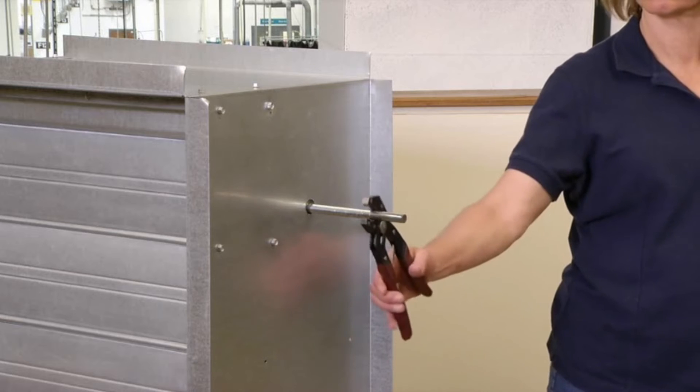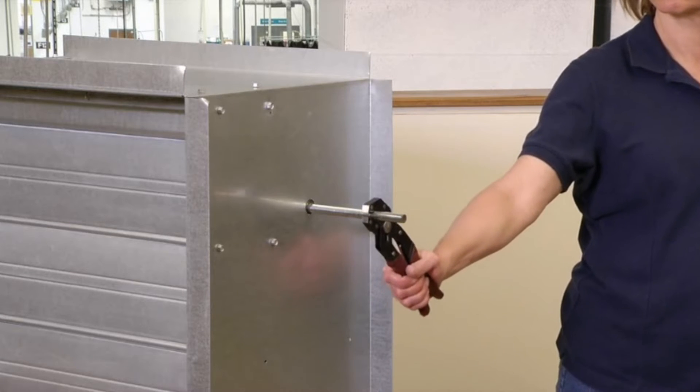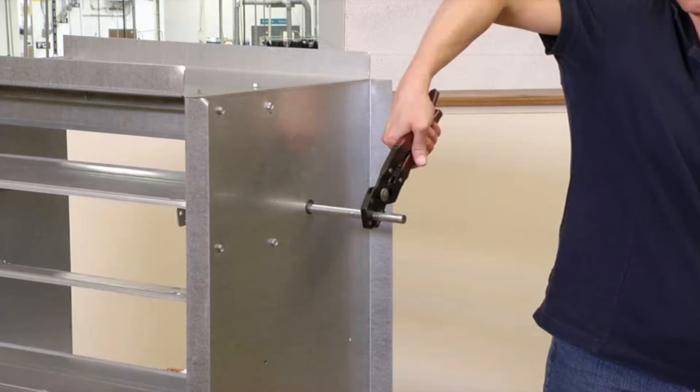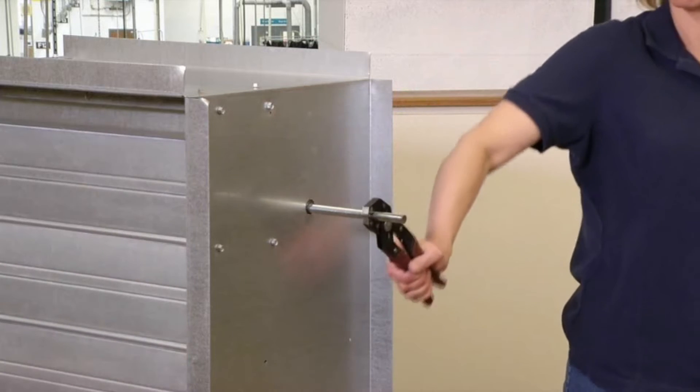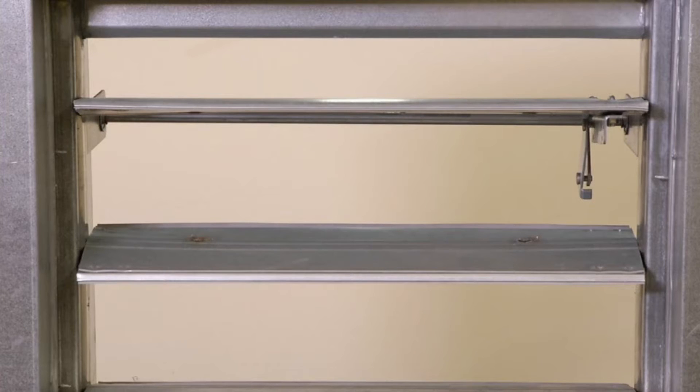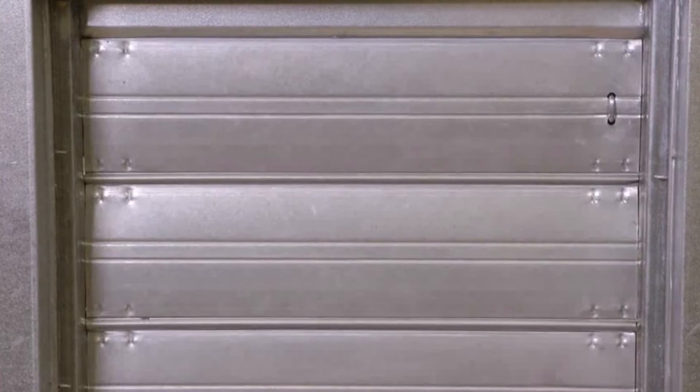First, determine the rotation direction of the damper in order to orient the actuator for clockwise or counterclockwise operation. Here, the damper rotates counterclockwise to open. For a spring return actuator, determine the desired power fail position. Here, we want the damper to close automatically upon power failure.